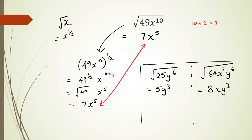Alright guys, that's basically it for this session. Just remember: with powers of powers, you multiply the powers, and if you have a square root, it's just multiplying the powers by a half. Thanks for watching — if you have any questions, drop them in the comments below and I'll try my best to answer them.